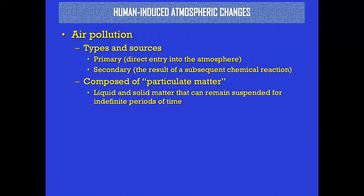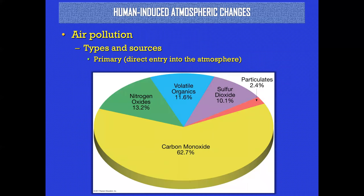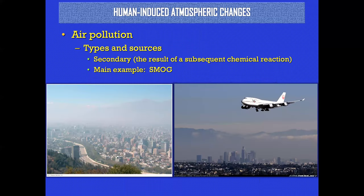Air pollution — there are two types: primary, which is direct entry into the atmosphere, and secondary, which is the result of a chemical reaction. One of the secondary types is called smog — a combination of fog, which is water vapor, combined with smoke, creating a nasty little soup called smog.